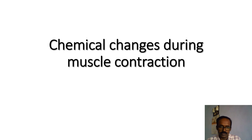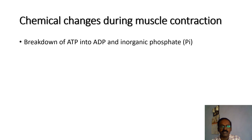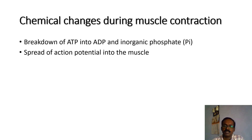Good morning. In this video we are going to discuss the chemical changes that occur during skeletal muscle contraction. The muscle gets energy during muscle contraction from ATP. Breakdown of ATP into ADP and inorganic phosphate provides the immediate source of energy for muscle contractions. ADP is important for the spread of oxygen potential into the muscle.